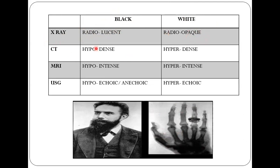CT scan works on the principle of X-ray — it is essentially a 3D X-ray. 'Tomo' means slices, so computed tomography means viewing the body in slices. CT was discovered by Godfrey Hounsfield, which is why Hounsfield units are used — named after him — to signify how dark or bright a substance appears. In CT, black is hypodense and white is hyperdense. In MRI, the suffix changes to 'intense': hypointense for black and hyperintense for white. In ultrasound, 'echoic' is used — hypoechoic for black and hyperechoic for white — because it is based on the principle of sound wave echoes. Anechoic means pitch black.